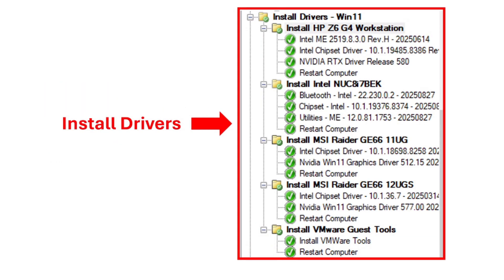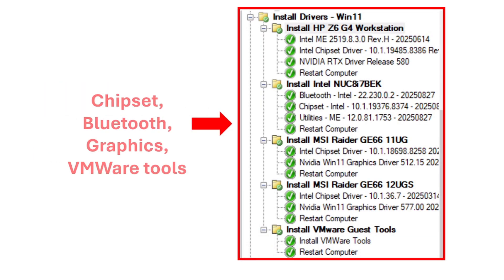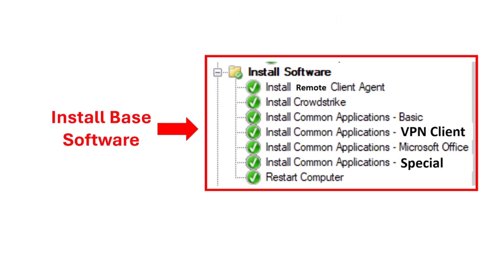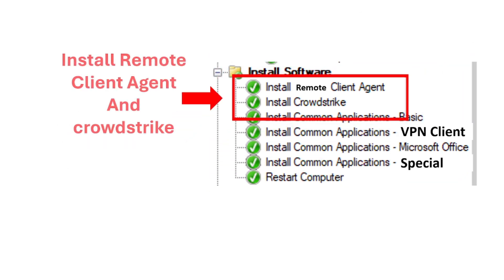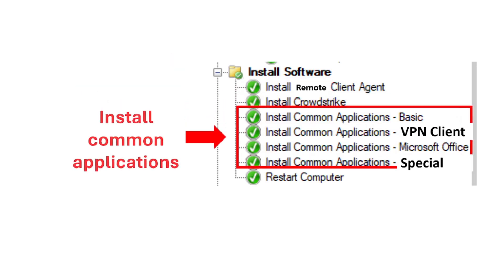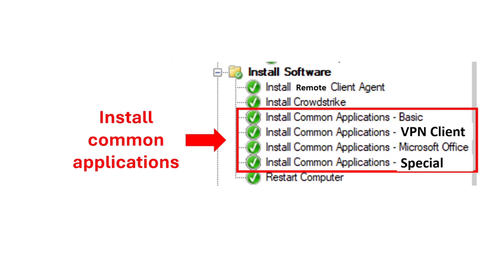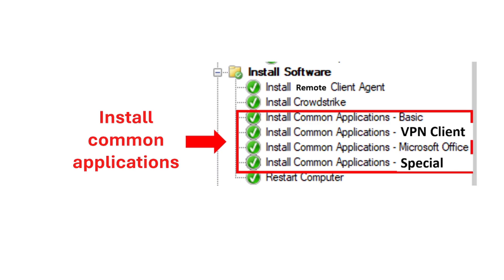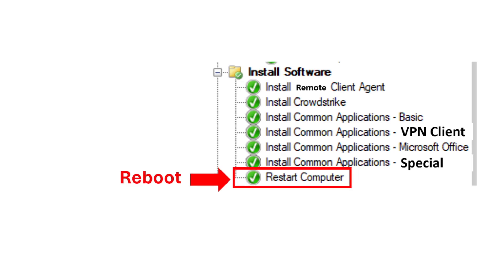Next, we're installing other necessary drivers like the chipset, Bluetooth, utilities, and graphic drivers for the different makes and models of computers we are using. The next step is installing the common applications on the computers — software that every computer should have — like the remote client agent, CrowdStrike in our case, VPN client for laptops, Microsoft Office, and special software used in the company. Then the computer reboots once everything is installed.